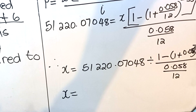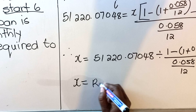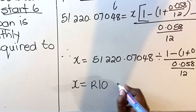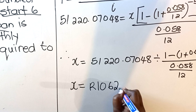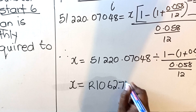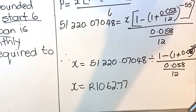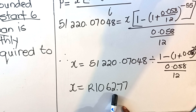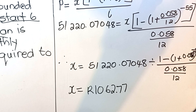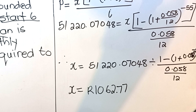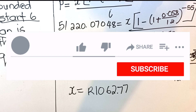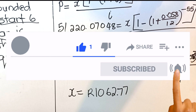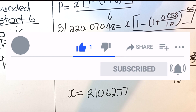x = R1,062.77. This means you are going to pay R1,062.77 per month. This is the result of staying five months without paying — your monthly payment is higher. This is how you do the delayed payment problem. This is the end of our lesson, thank you for watching.